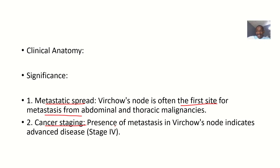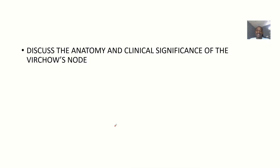This is about cancer staging. The presence of cancer in the Virchow's node shows that the cancer is now at the metastatic stage. When cancer starts, first it is a tumor, then there is nodal involvement, then metastasis. For a cancer to move from the stomach all the way to your neck shows the cancer is already spreading. If you confirm metastasis in the Virchow's node, it tells you that you are dealing with a cancer that is at the spreading stage.